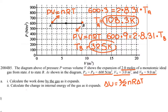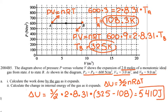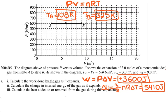Now I'll plug those values into the change in internal energy formula. ΔU equals (3/2) × N × R × (325 K − 108 K), which gives approximately 5400 joules.